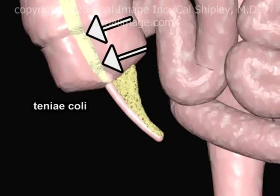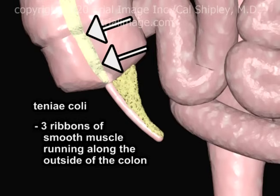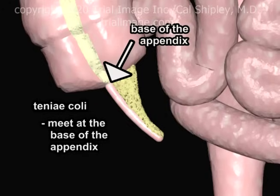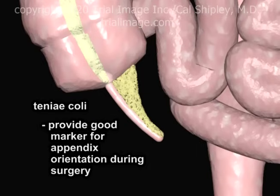The teniae coli are ribbons of smooth muscle which run longitudinally along the outside of the colon. Only one of the teniae can be seen from this viewpoint. The significance of the teniae coli is that they come together and meet at the base of the appendix. As such, they can provide an excellent marker for the orientation of the appendix during appendectomy.